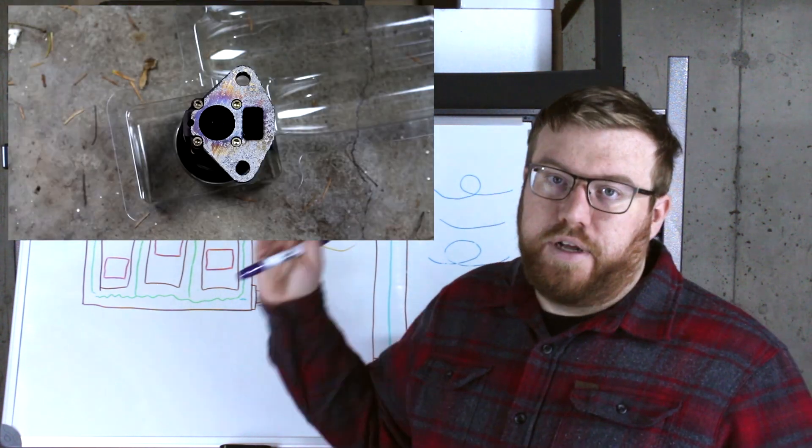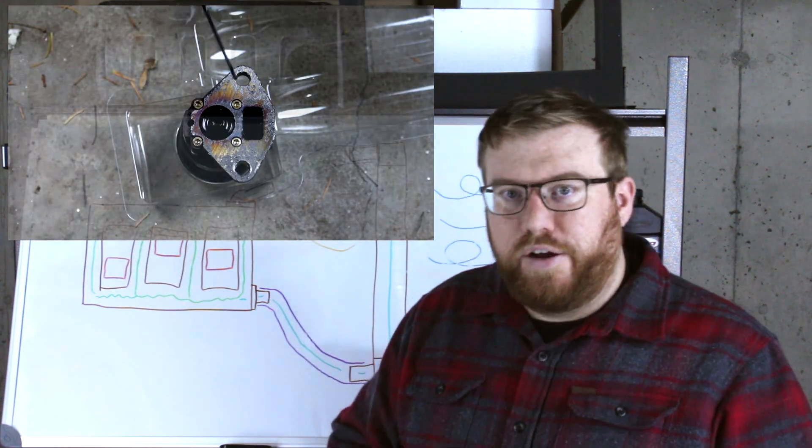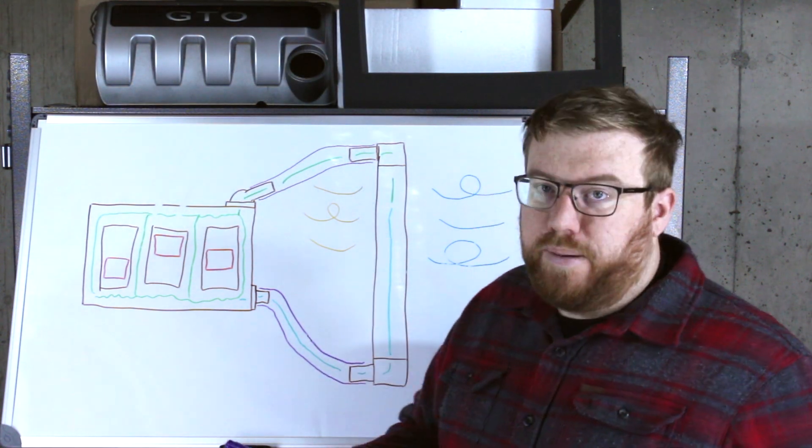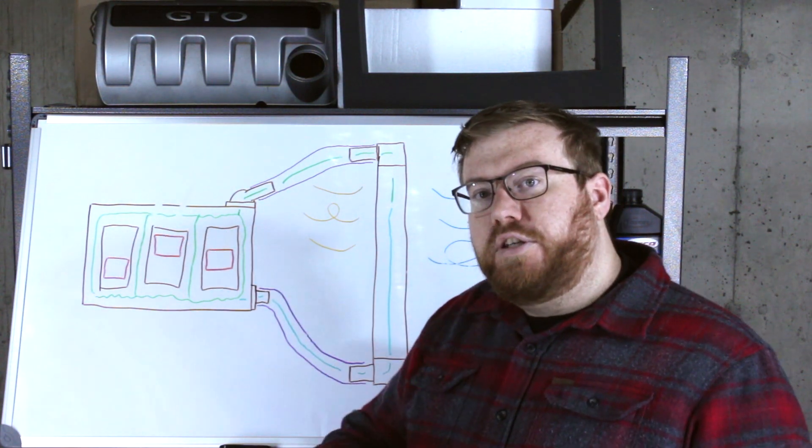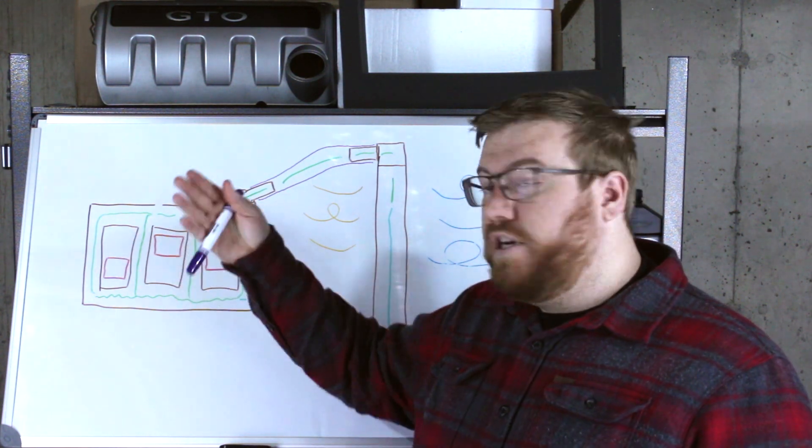We'll talk about that a little more in depth when I do an exhaust gas recirculation valve video. But yes, the third way to regulate engine temperatures is to take hot exhaust gas, feed it back into the engine, and cause combustion to be weaker, and therefore the engine is cooler.